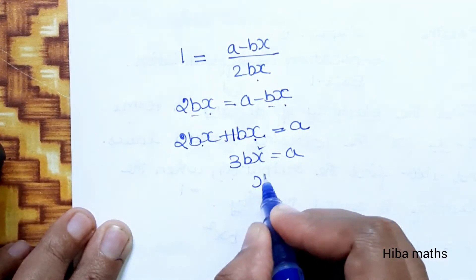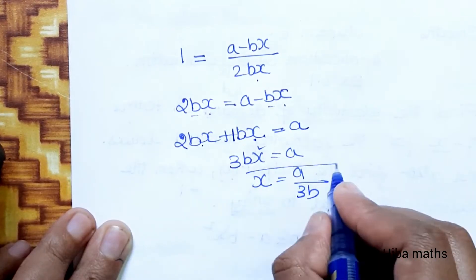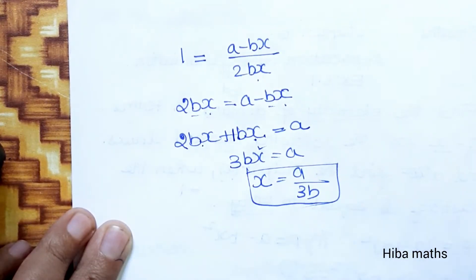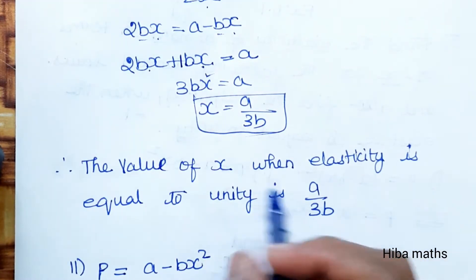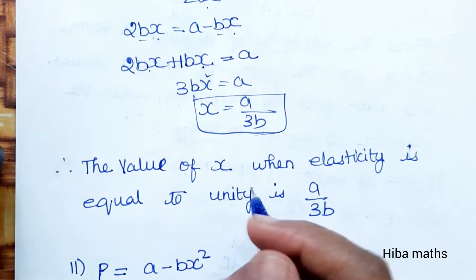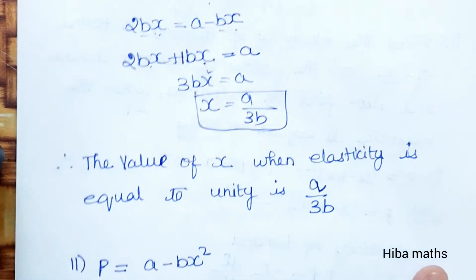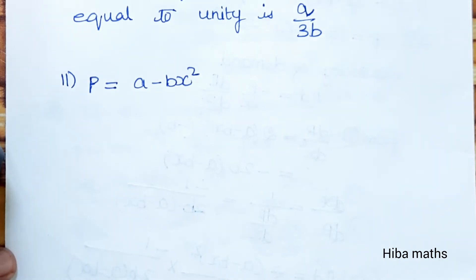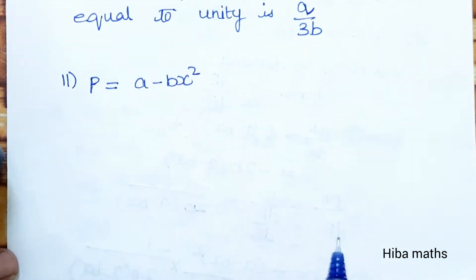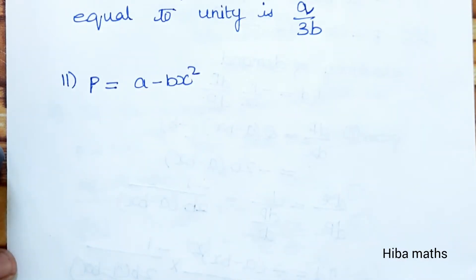Therefore x equals a divided by 3b. The output value when elasticity is equal to unity is x equals a by 3b. The second subdivision: p equals a minus bx squared. Find the elasticity of demand, and find the value of x when eta_d equals 1.